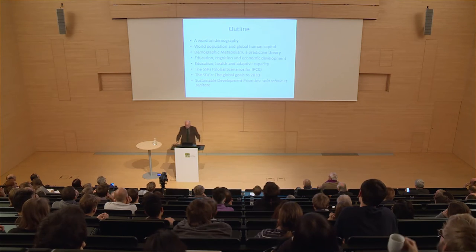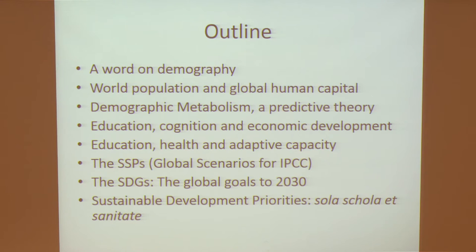Our institute also got a new one, so we now have seven, which is actually quite good for a small social science institute in Austria. What would I be talking about today? First, a few words about what the discipline of demography tries to do, then we'll focus on the global population trend and particularly on human capital — not just the number of people, but their education and skills. Then I'll talk about the concept of demographic metabolism, which is a predictive theory — we don't have many predictive theories in the social sciences.